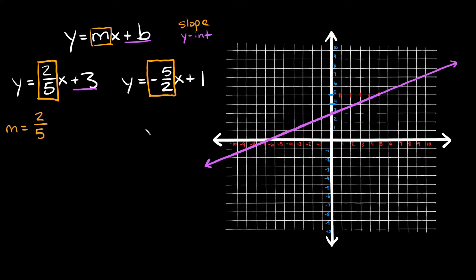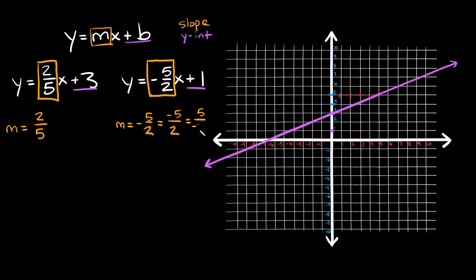Now let's graph the second equation. Again, start by graphing the y-intercept — that number at the end — which is at positive one, so plot a point on the y-axis at positive one. The slope on this one is negative five-halves. The negative sign you can throw to either the top or the bottom — so it could be negative five over two, or positive five over negative two.